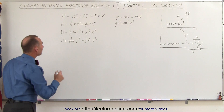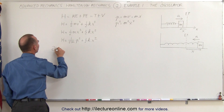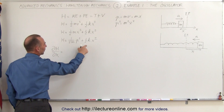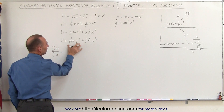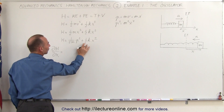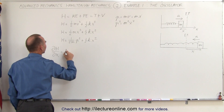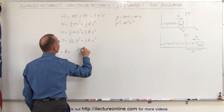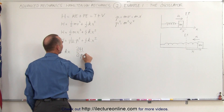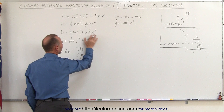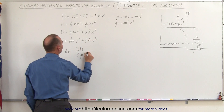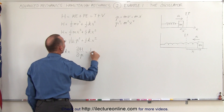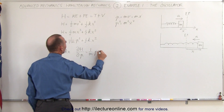Now we're going to take the partial of the Hamiltonian with respect to x, and that will give us — when we take the derivative — 2 times ½, which is 1, times kx. And then we take the partial of the Hamiltonian with respect to momentum. The first term goes to 0, and here we get 2 times ½, which is 1, so that will be 1 over m times p.